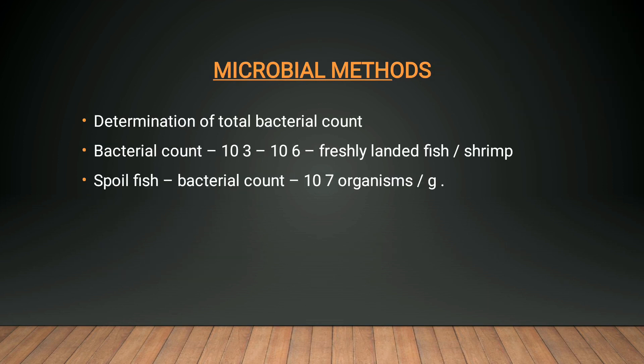The microbial method of detection can also be done based on bacterial count. If the bacterial count is 10³ to 10⁶ organisms per gram it is considered fresh fish, but if it exceeds 10⁷ organisms per gram it is said to be spoiled fish. These are the methods of detecting spoilage in fishes — chemical method, sensory method, and instrumental method.